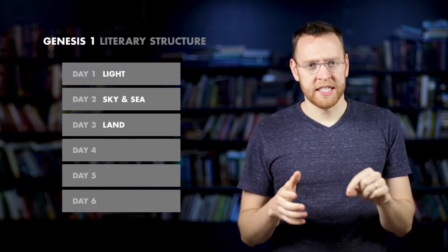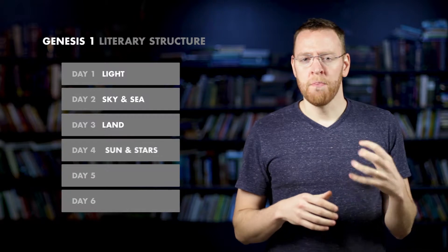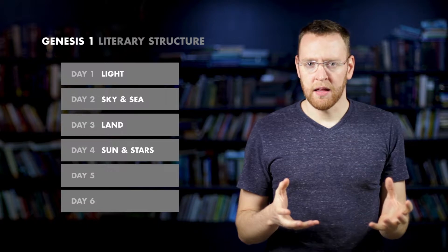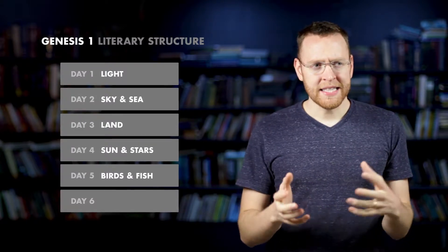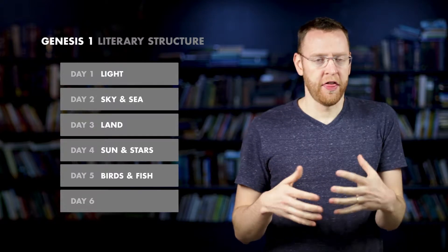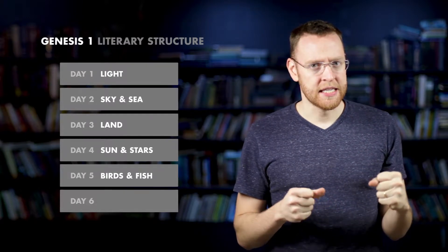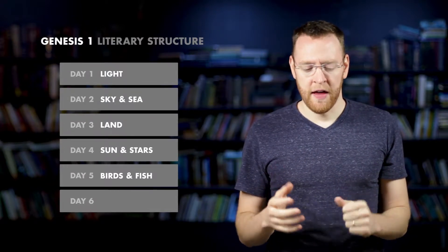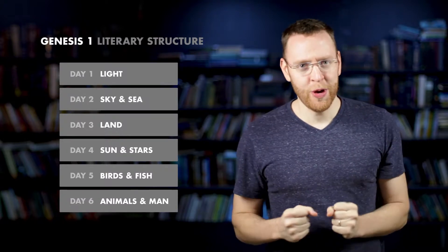Then on day four, you start to see connections with days that have gone before. On day four, you have the sun, moon, and stars created, which is connected to day one when light was created. On day five, you have birds and fish created — that goes with day two, when the spaces in which those animals live, namely sky for birds and sea for fish, were created. And on day six, you have land animals and man and woman created — those land creatures par excellence.